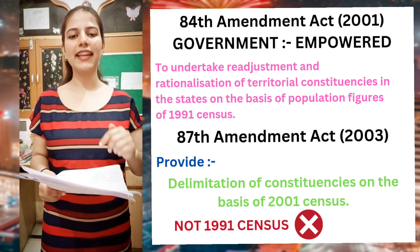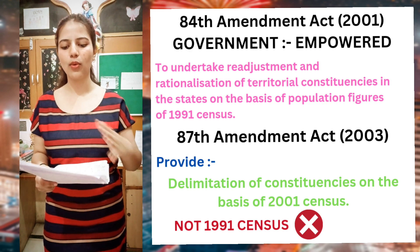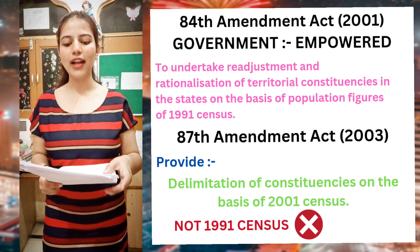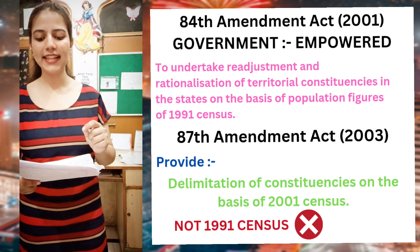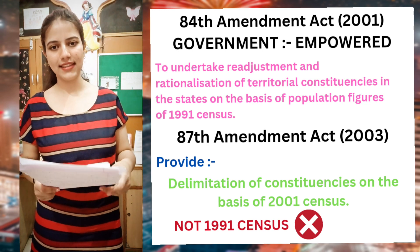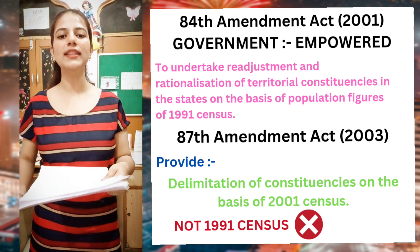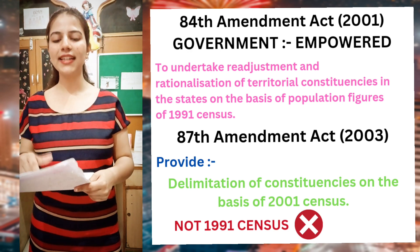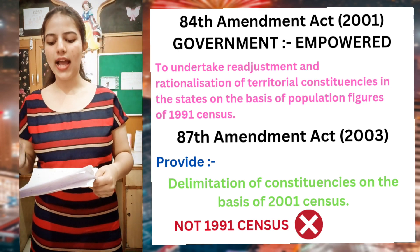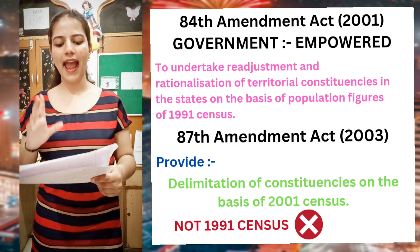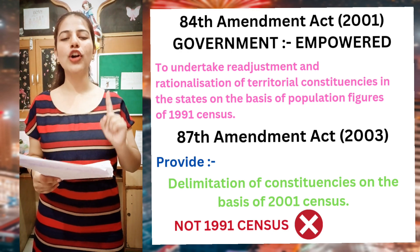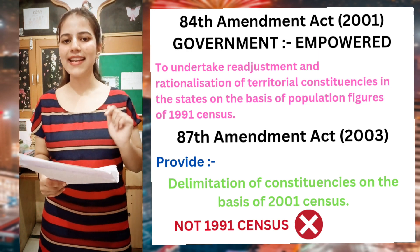The 84th Constitutional Amendment Act extended the freeze for more years. Under this act, it empowered the government to undertake re-adjustment and rationalization of territorial constituencies in the states, on the basis of the population figures of the 1991 census. After 1991, in 2001 and then 2011, the 84th Amendment Act provided that you have to work with the 1991 census figures for re-adjustment.